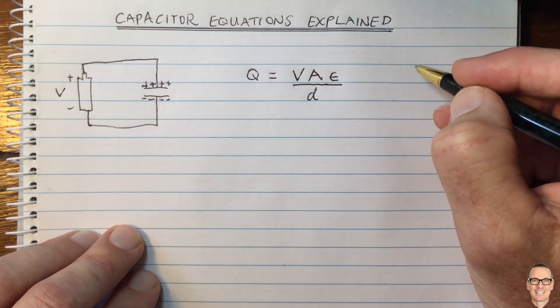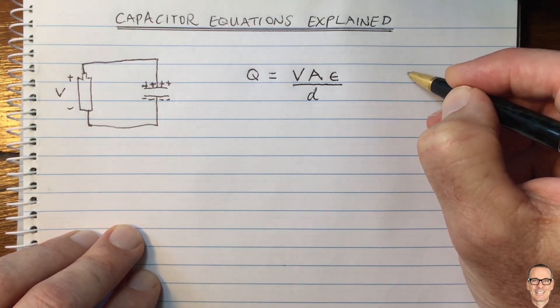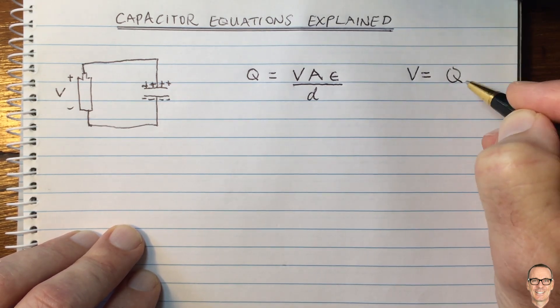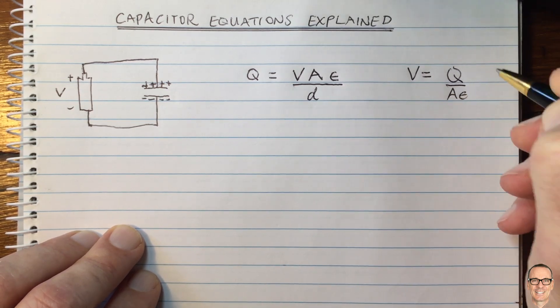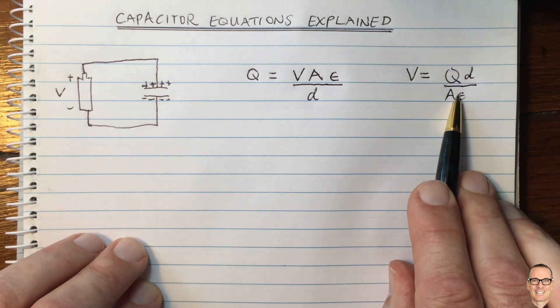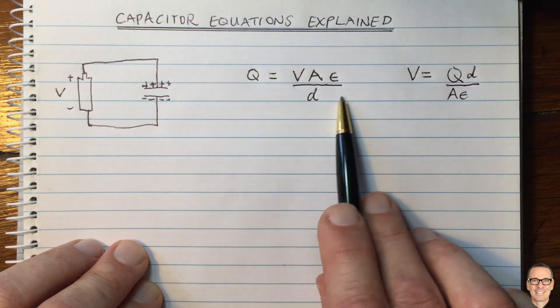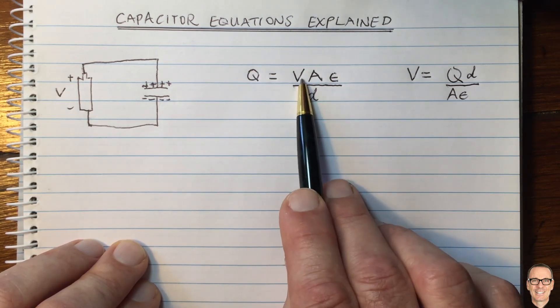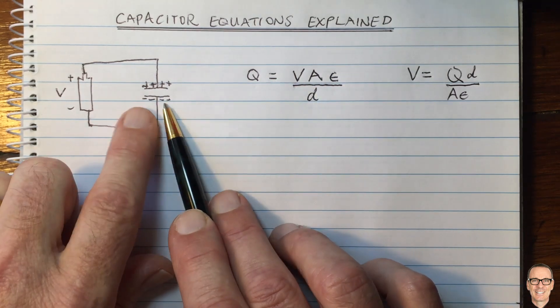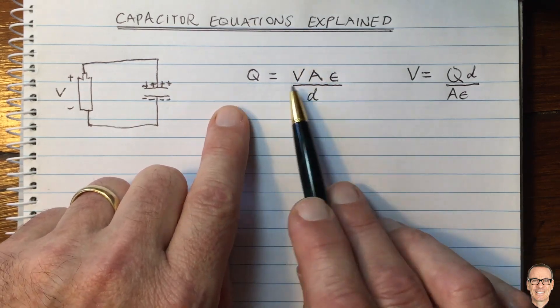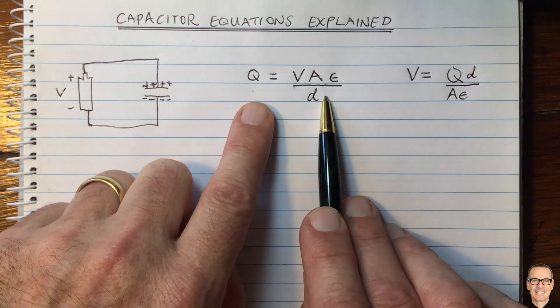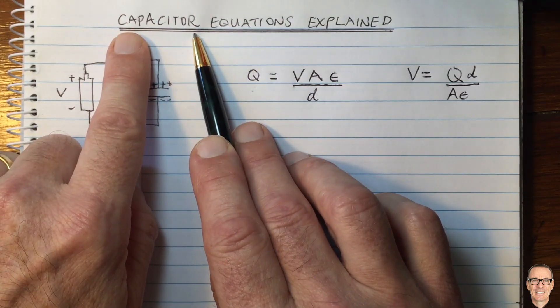Now often you see this written in a different form, in a rearranged form in terms of voltage where voltage equals Q divided by epsilon A times distance. This is often the way that it's shown in textbooks. I prefer to think of it this way here because the voltage is an input to this equation. It governs how much charge comes onto this plate. So this way of writing the equation is an input-output relationship, and I much prefer this in terms of intuitively understanding what's happening inside a capacitor.